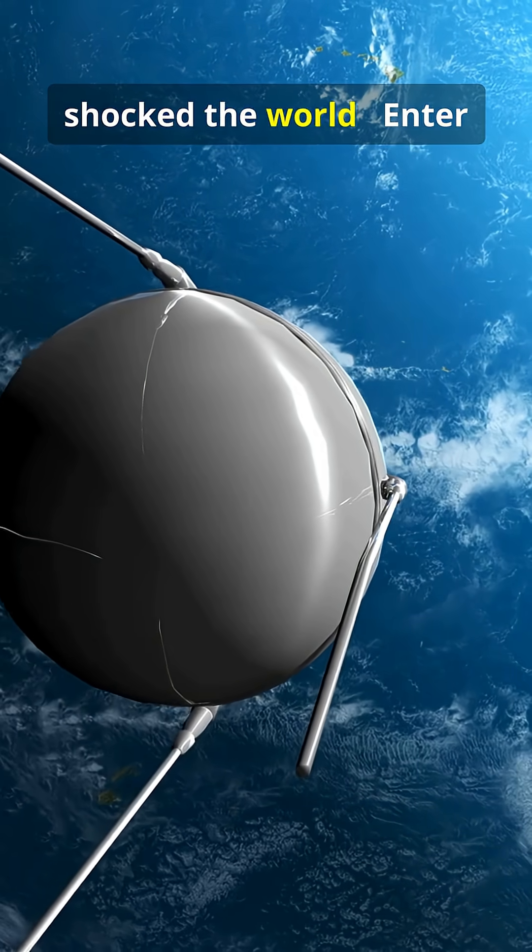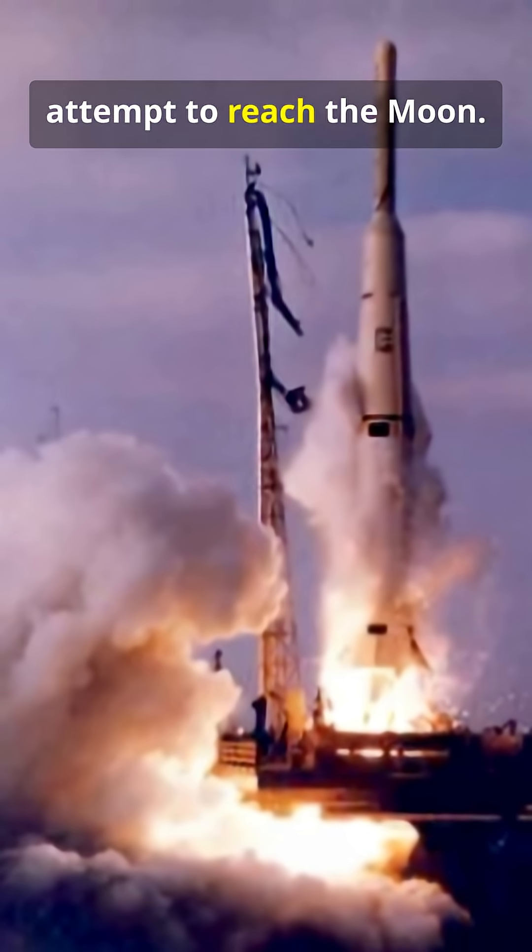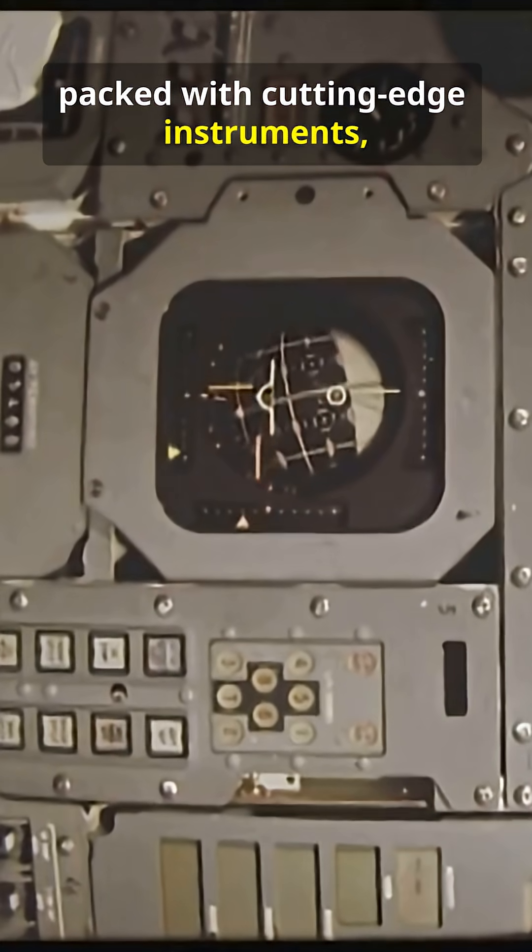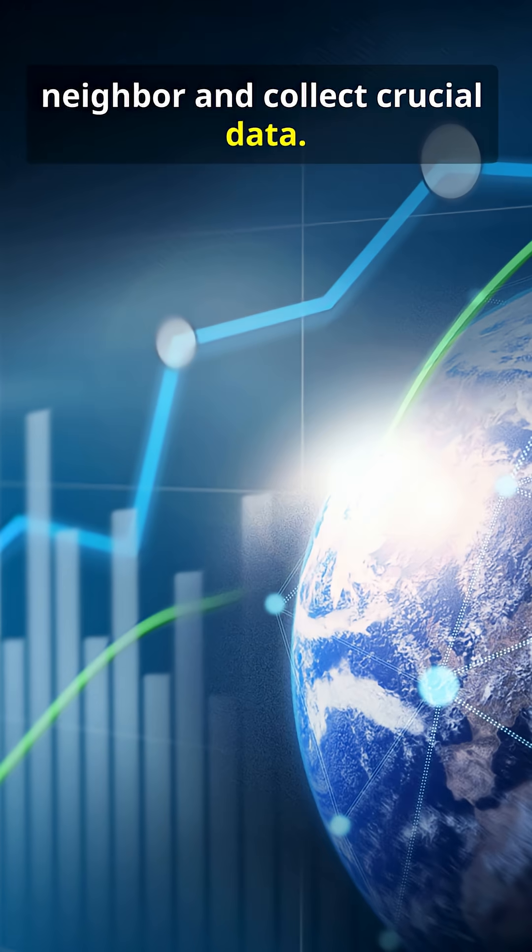Enter Pioneer 2, NASA's third attempt to reach the moon. This 87-pound spacecraft was packed with cutting-edge instruments ready to orbit our celestial neighbor and collect crucial data.